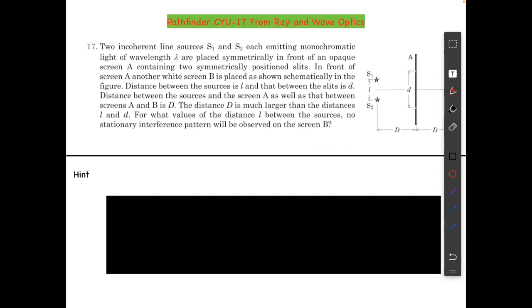The sources are placed symmetrically in front of an opaque screen A containing two symmetrically positioned slits. In front of screen A, another white screen B is placed as shown schematically in the figure. Distance between the sources is l and that between the slits is d. The distance between sources and screen A as well as that between screens A and B is capital D.